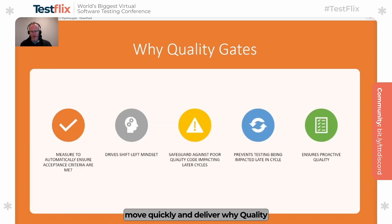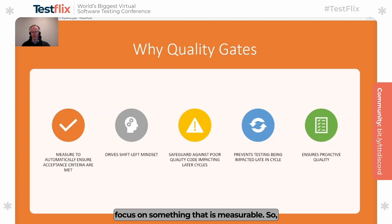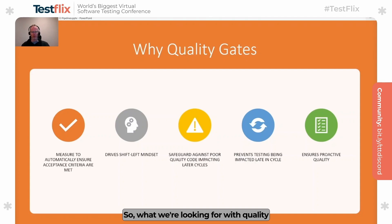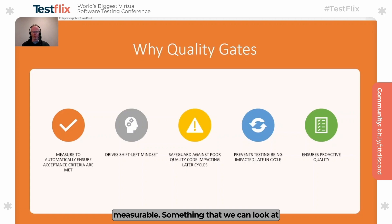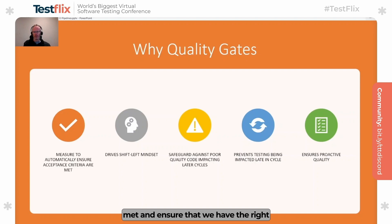Why quality gates and why should we focus on them? I think it's first because there's a focus on something that is measurable. When I say 'what's of high quality,' it's often very difficult to determine what is high quality software and what is not. So what we're looking for with quality gates is something that is really measurable, something that we can look at from an acceptance criteria perspective, to make sure that everything is met and that we have the right measures in place.